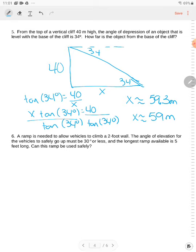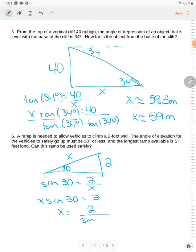Number 6. A ramp is needed to allow vehicles to climb a two-foot wall. The angle of elevation for the vehicles to safely go up must be 30 degrees or less. Can this ramp be safely used if all we have is 5 meters? So sine 30 is equal to 2 divided by x. So x sine 30 is equal to 2, x is equal to 2 divided by sine 30. So x is equal to 4. So I need a 4-foot ramp. So the answer is yes because 4 is less than 5.